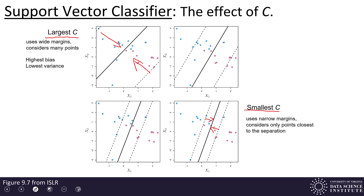It's also worth thinking about the bias-variance tradeoff here. A large C has the highest bias and the lowest variance. It has the lowest variance because individual points don't contribute very much to determining where that separating hyperplane is — the separating hyperplane doesn't vary a lot based on individual points. At the other extreme, the smallest C has the lowest bias and the highest variance. You can think about the highest variance this way: if you vary some of those points that are close to the separating hyperplane, there are only a few of them, so that will have a bigger impact on where the separating hyperplane goes.